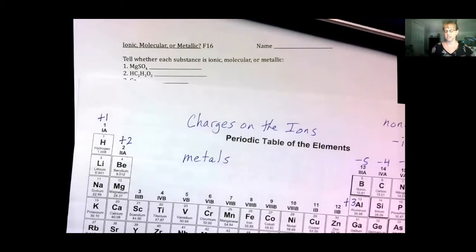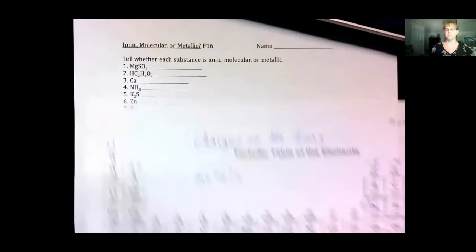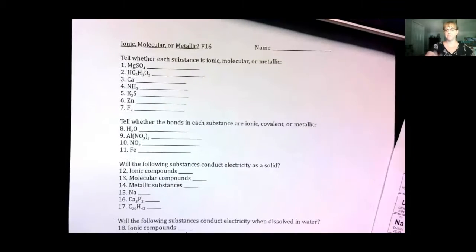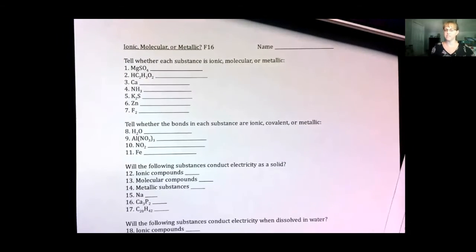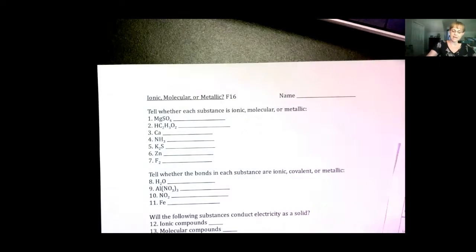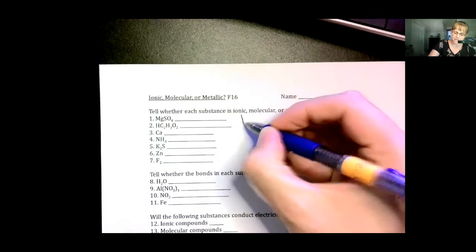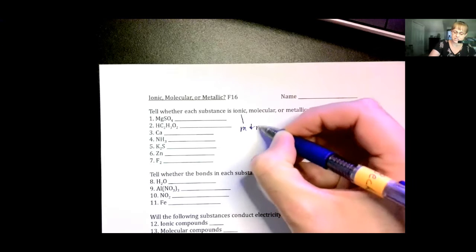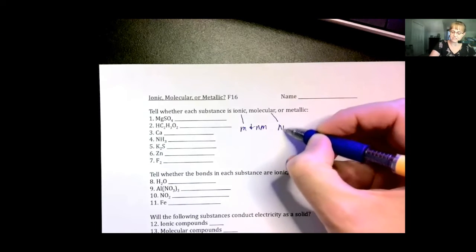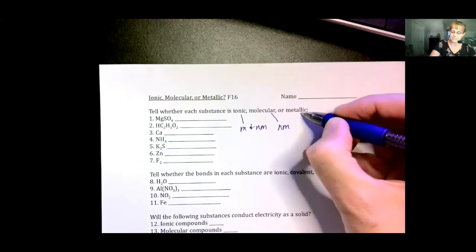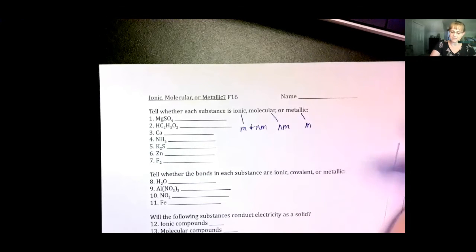When you do this worksheet, you will need a periodic table. First of all, tell whether each substance is ionic, molecular, or metallic. Remember, an ionic compound is made of metals and non-metals. A molecular compound is made of non-metals only, and a metallic substance is made of metals only.